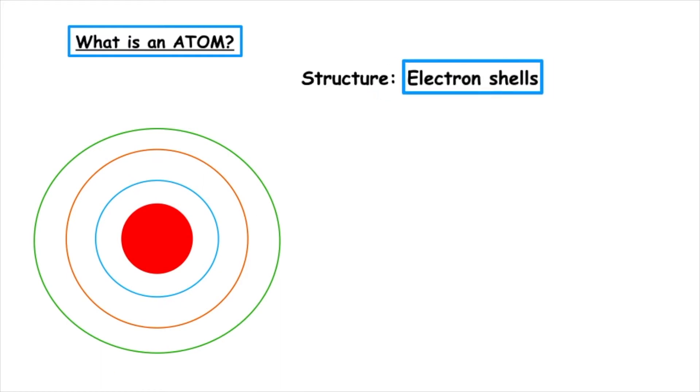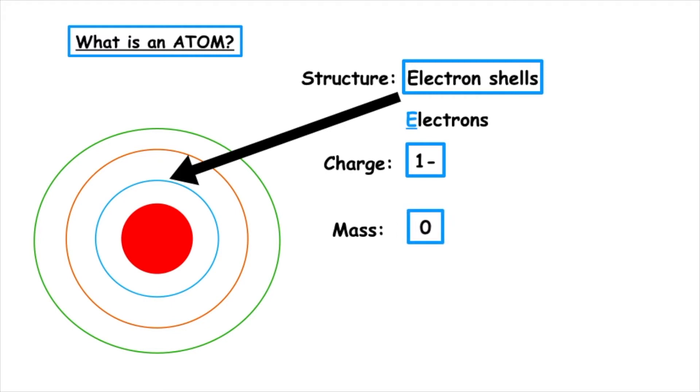Outside of the nucleus, we have electron shells and this is where electrons can be found. Electrons have a negative charge, so have a value of one minus. Because they're not found in the centre of the atom, they do not have a mass. So we tend to say that this is negligible or give it a value of zero.